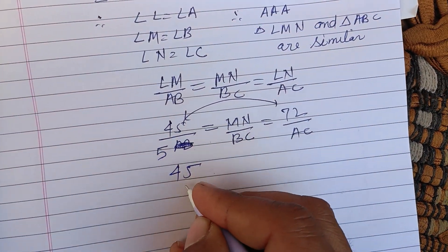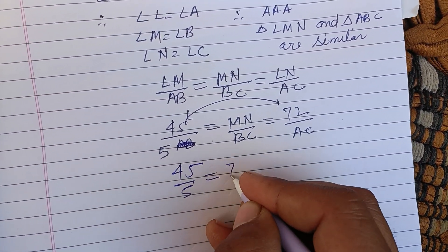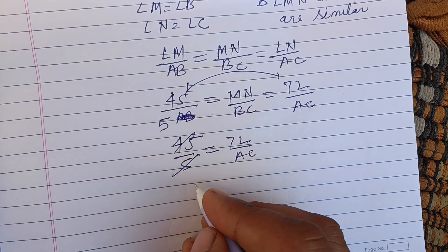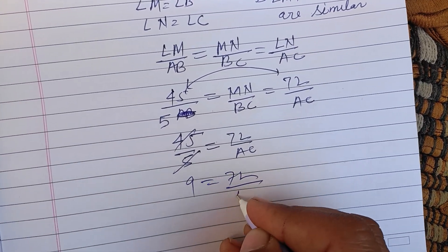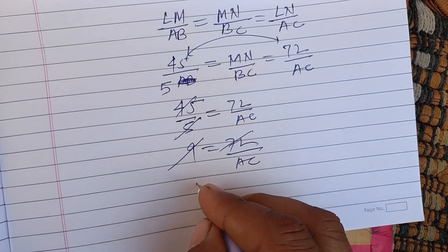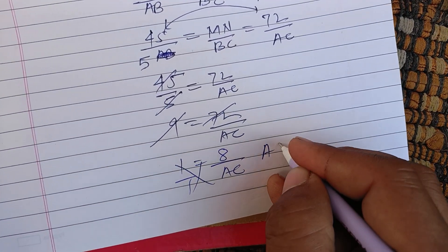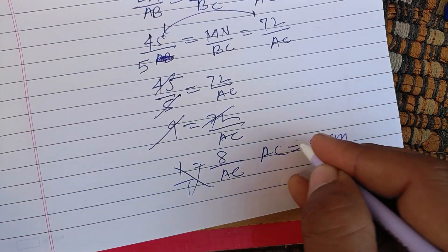So 45 upon 5 equals 72 upon AC. Simplifying, 9 upon 1 equals 72 upon AC, which gives 8 upon 1 equals 72 upon AC. On cross multiplication, AC will be obtained as 8 centimeters.